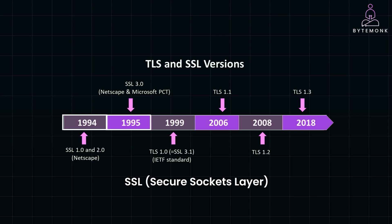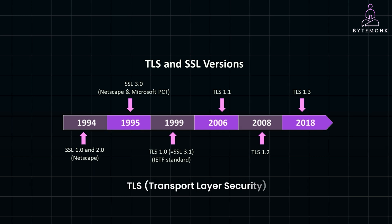SSL provided server-side authentication with certificates, but it had vulnerabilities, leading to its eventual replacement by TLS. TLS, or Transport Layer Security, launched in 1999, became the de facto standard for encrypting communications over the web.